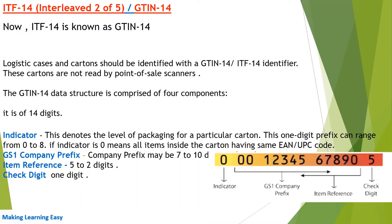The indicator denotes the level of packaging. The value could be 0 to 8. If the value is 0, it means all items inside the carton or box have the same UPC code or EAN code. If the value is not 0 — meaning between 1 to 8 — the items present in the box or carton